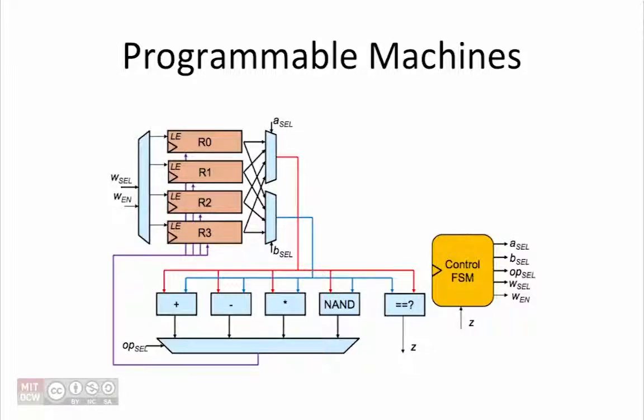For this problem, we are going to make use of this simple datapath that consists of a four register register file, a relatively simple arithmetic logic unit that can perform add, subtract, multiply and NAND operations. In addition, it can compare two inputs and determine whether or not they are equal. The result of the comparison Z can then be used to control what happens next.